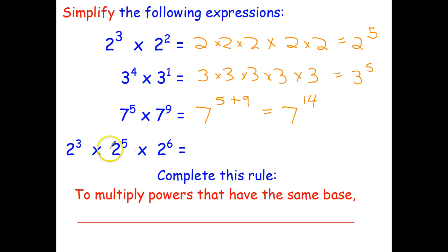Now this works for 3 factors as well. How many twos do I have multiplied together? Well I've got 3 there, another 5, and another 6. So how many twos all together? Well 3 plus 5 is 8 plus 6 is 14.